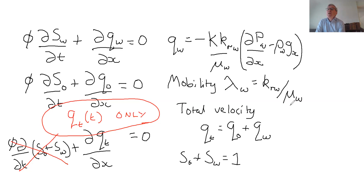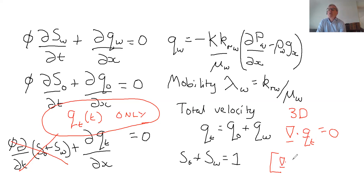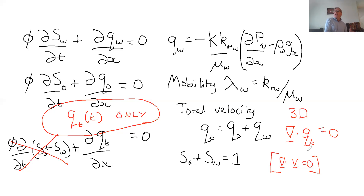If you think about this in 3D, in three dimensions what you find is d/dx, d/dy, d/dz — so it's actually the divergence of the total velocity that is zero. For those who know anything about fluid dynamics, you're probably familiar with the idea that for incompressible flow the divergence of the velocity is zero. When we look at porous media flow, it's not the velocity but the Darcy velocity — the Darcy flux — that is divergence-free in three dimensions.